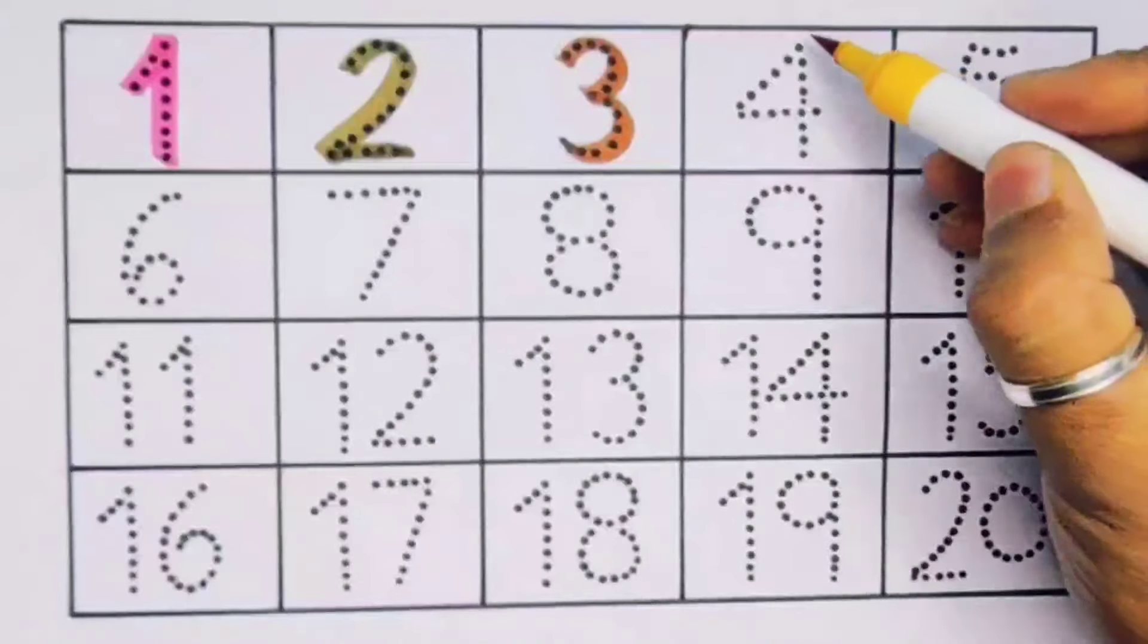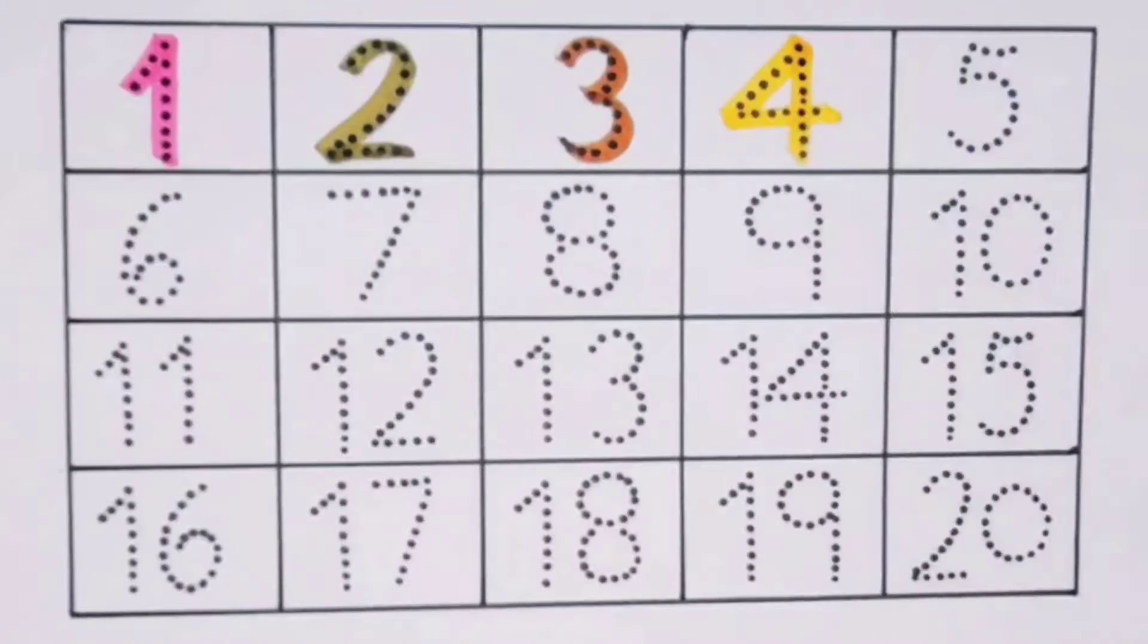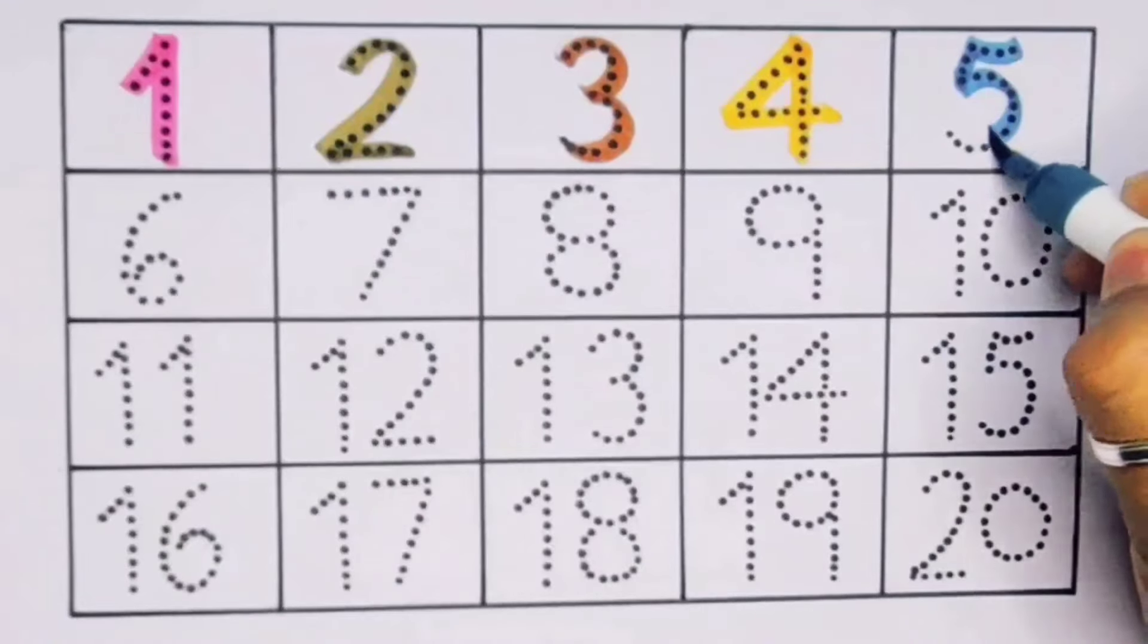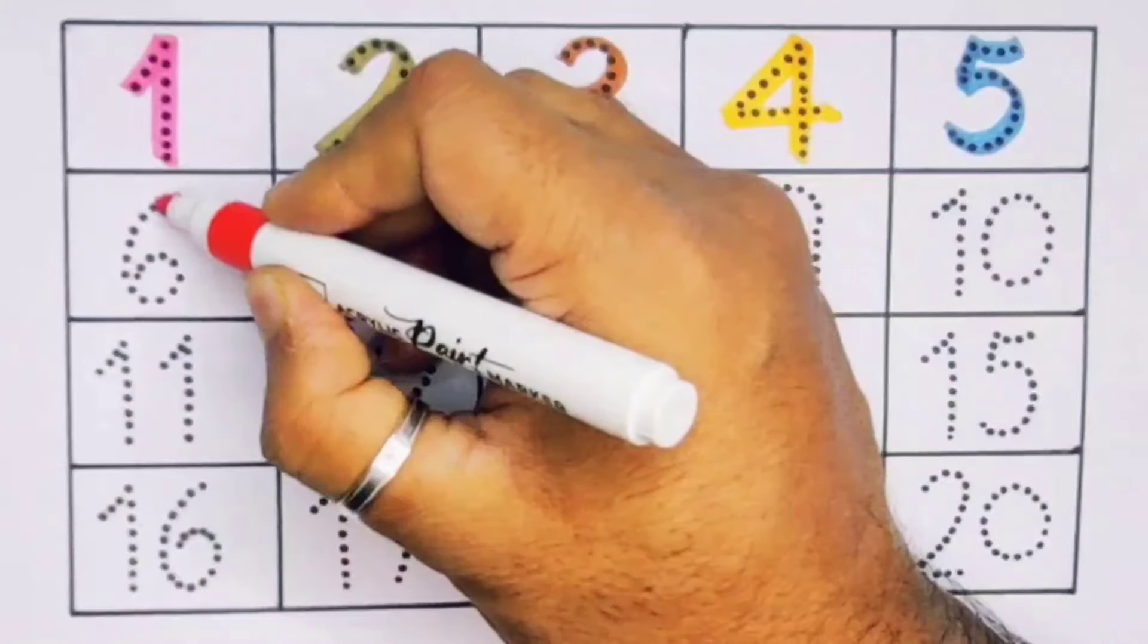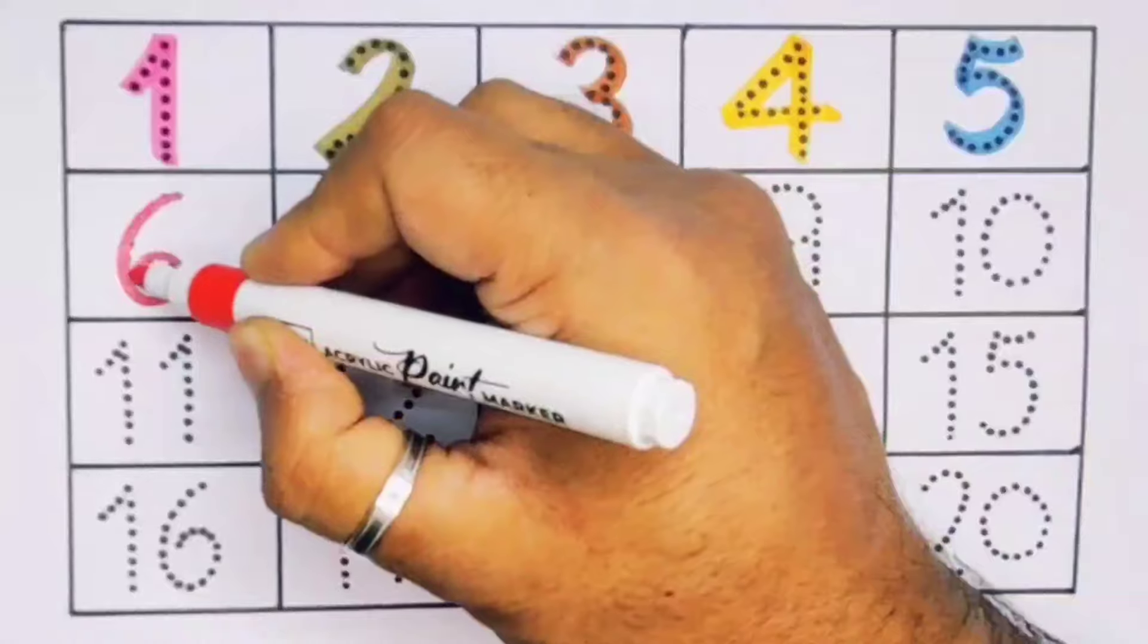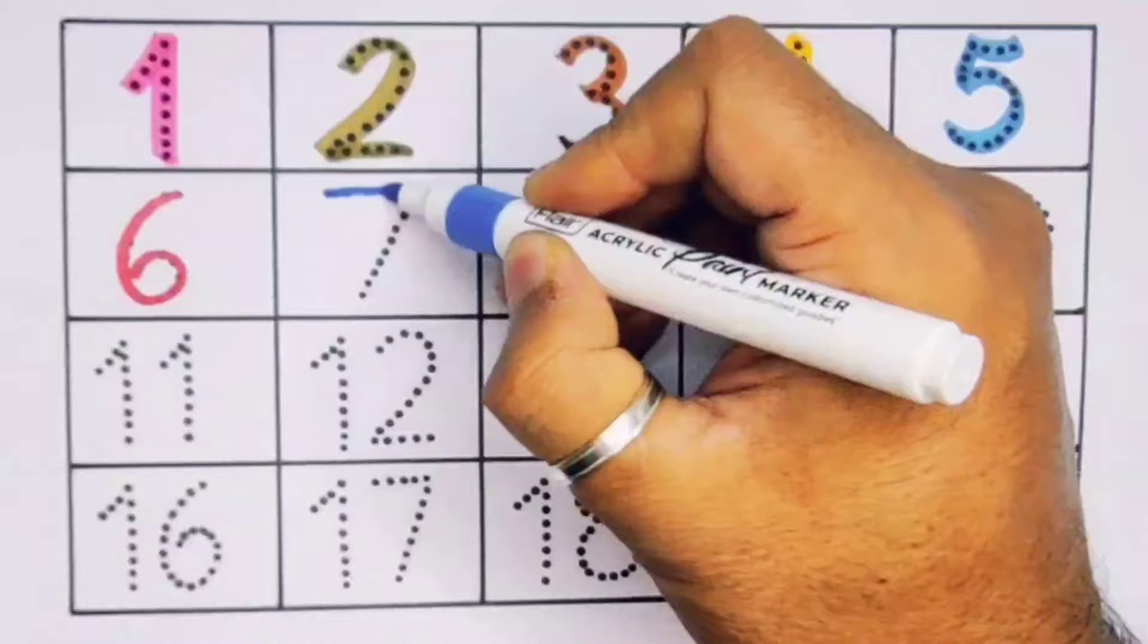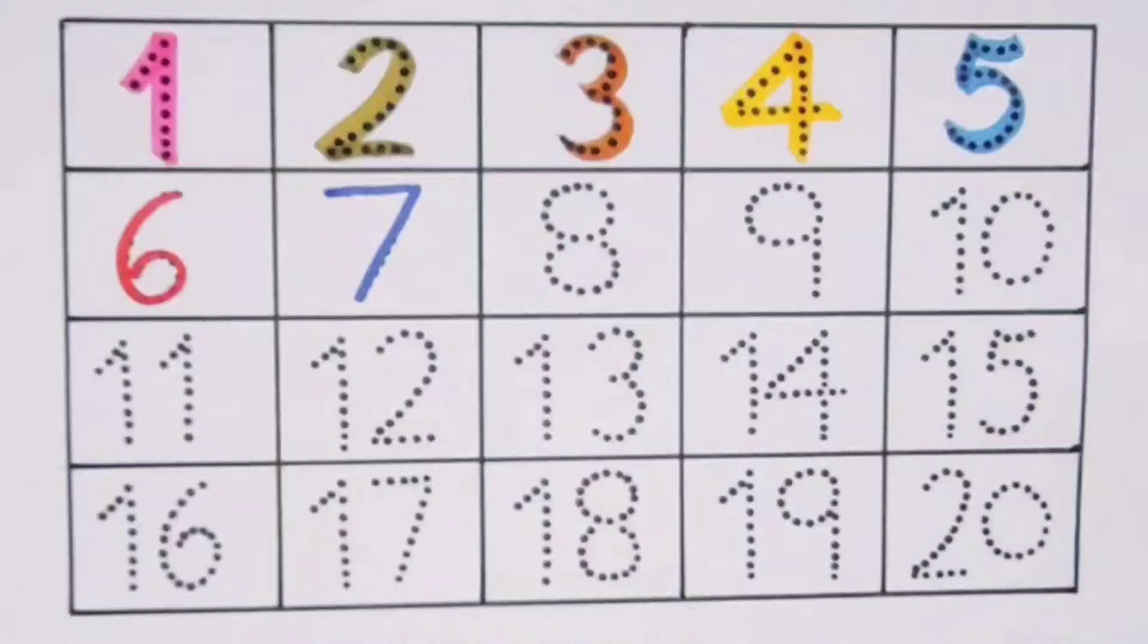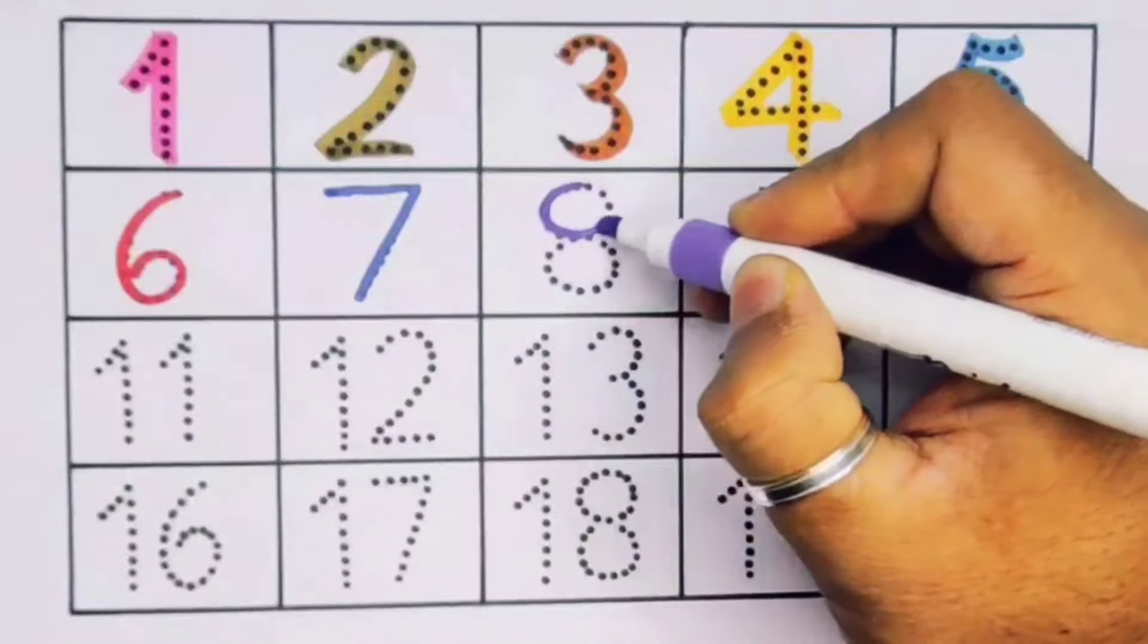Next four, number four. Next five, number five. Next six, number six. Next seven, number seven. Next eight, number eight.